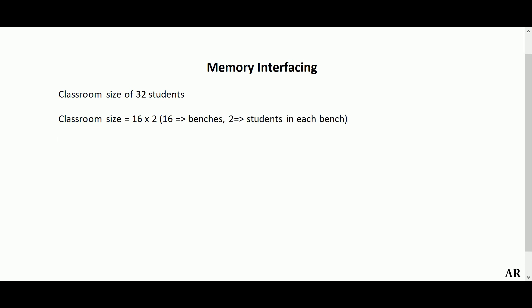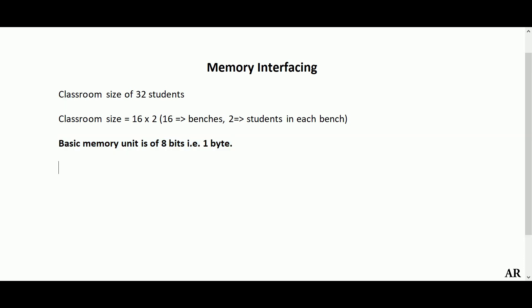In the case of a memory chip, things are a bit different but the concept remains the same. The basic memory unit can store 8 bits, which is 1 byte. That is why we say RAM size is 1 GB, 3 GB, 4 GB and so on — we say bytes, not bits. Please remember this important point: the basic memory unit is of 8 bits, that is 1 byte, and 1 memory location stores 1 byte of data.